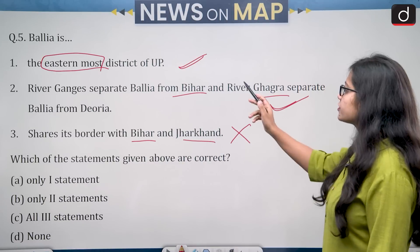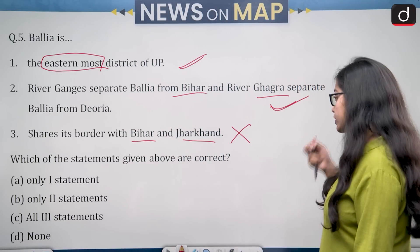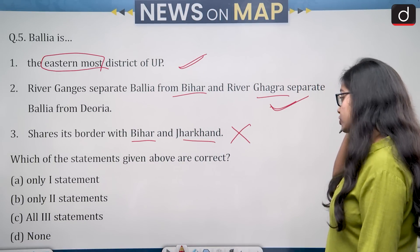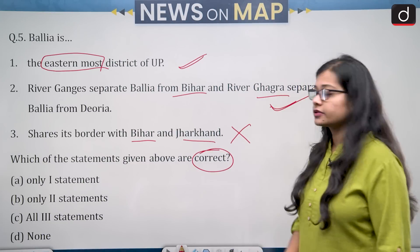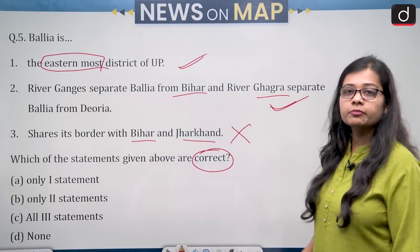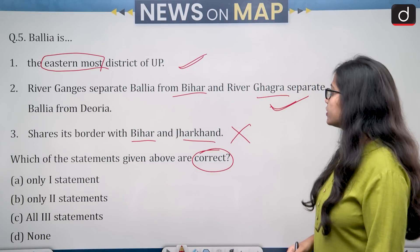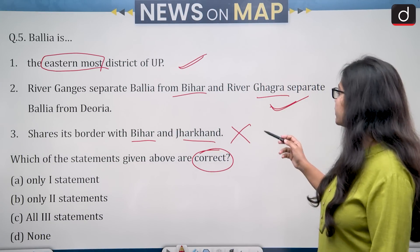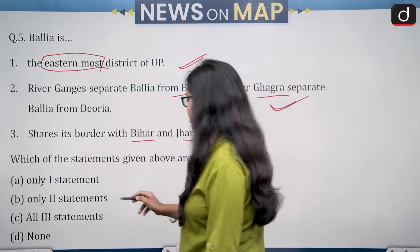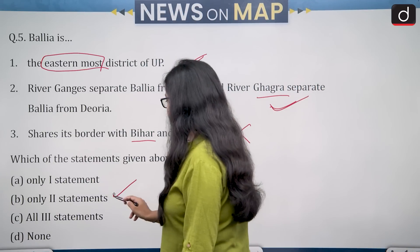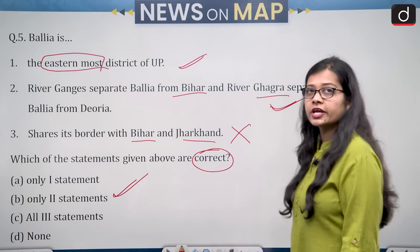The first and second statements are correct, and the third is wrong. The question asks which statements are correct. Two statements are correct — the first and second — so the correct answer is option B, only two statements.